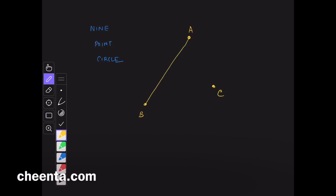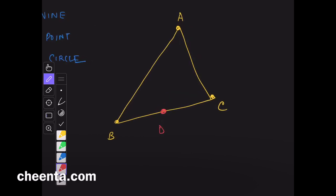So, the setup of the problem is like this. You have a triangle ABC. And you have the 3 midpoints of the triangle. Let's call them D, E and F.